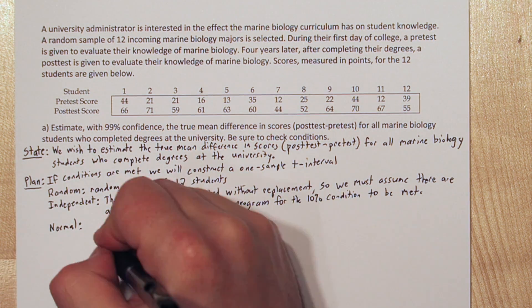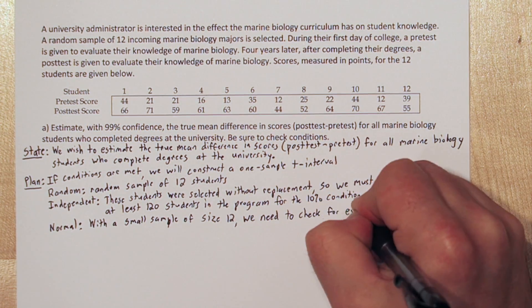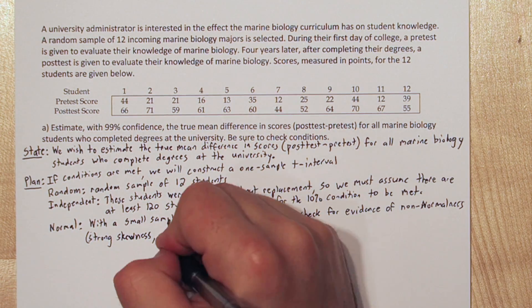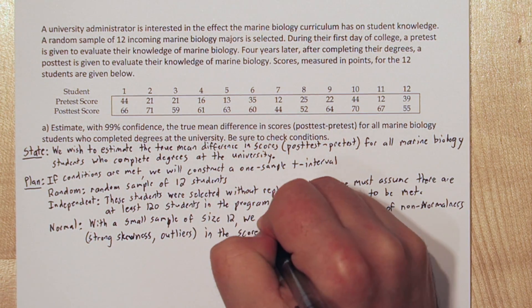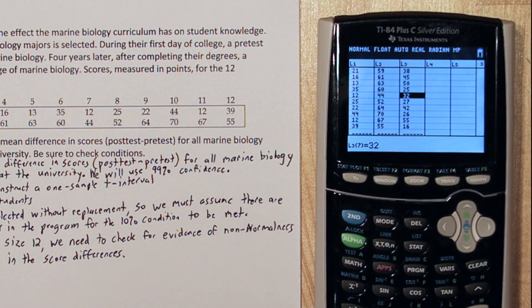Next the normal condition. This one's really important to check since we have such a small sample size of 12. We need to check for evidence of non-normalness, like strong skewness or outliers, in the score differences. So the good news is, we already have all the differences listed in list 3. So let's check a modified boxplot for outliers.